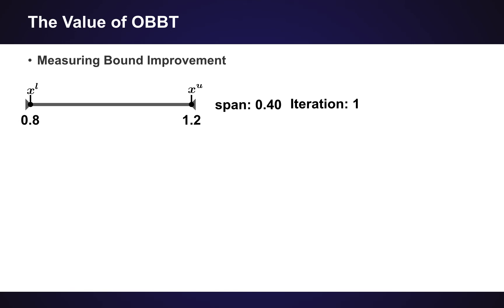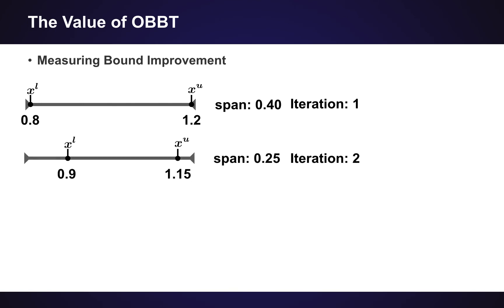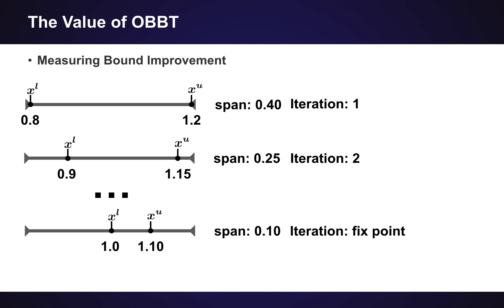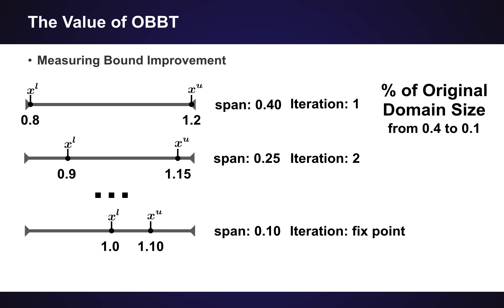Let's talk about what you can gain and how much you can improve on realistic test cases. To do that, I'll introduce a measure of bound improvement. Say the original bounds on variable x ranged from 0.8 to 1.2, a span of 0.4. After the first iteration, we tighten it to 0.9 to 1.15, a span of 0.25. At the fixed point, the span is 0.1. The percentage of the final span relative to the original would be 0.1 over 0.4, meaning our bound is now 25% of the original bound.